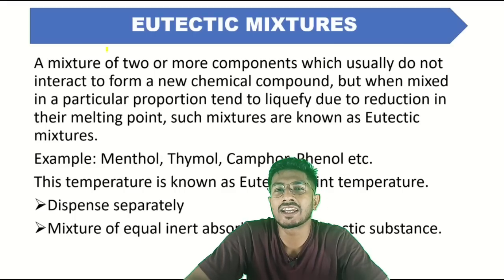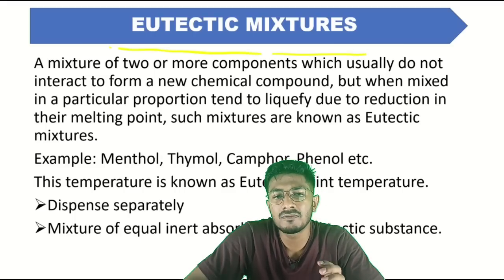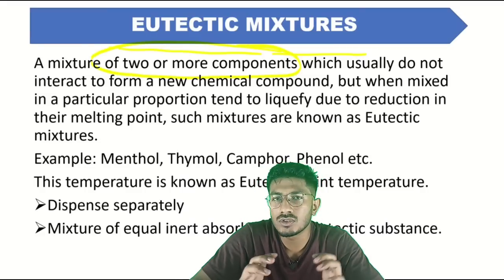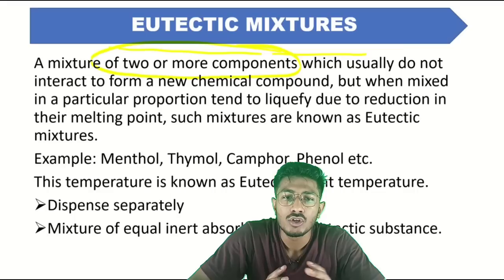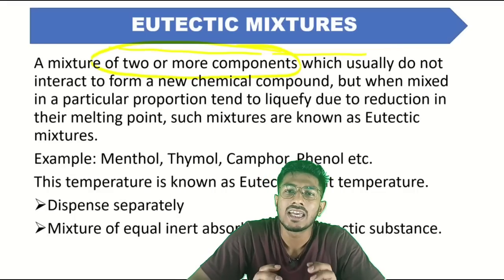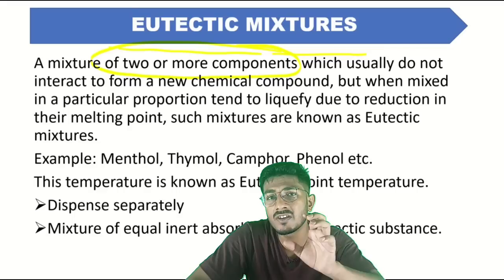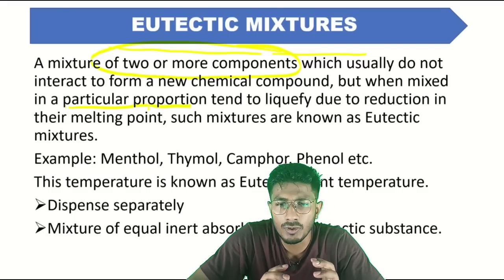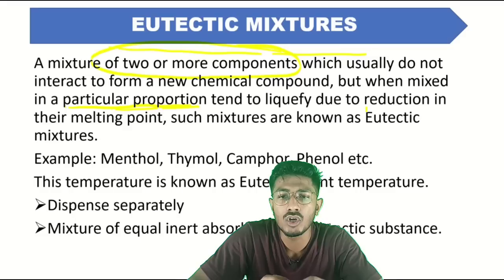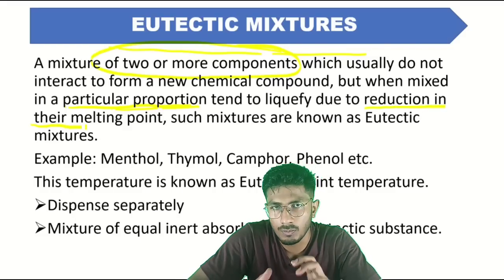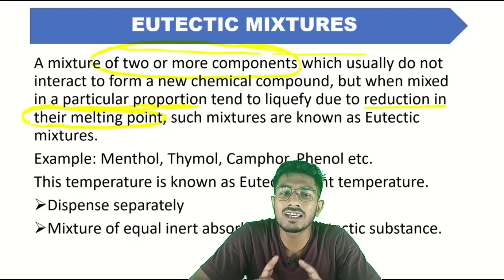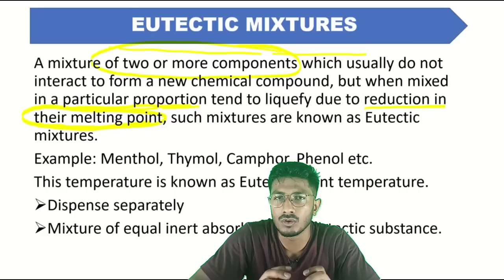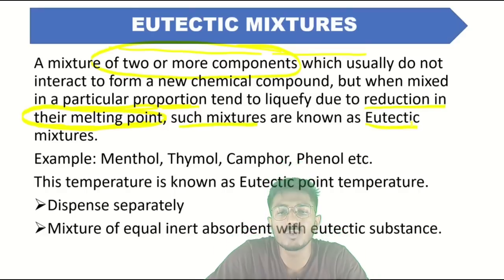Next is eutectic mixtures. A eutectic mixture is a mixture of two or more components. When we mix two or more components, you don't generally form a new compound. But when they are mixed together in a specific proportion, they tend to liquefy — the mixture is liquefied due to the reduction in their melting point. It seems to melt, and such a mixture is called a eutectic mixture.